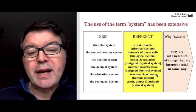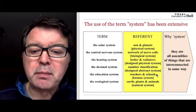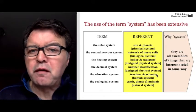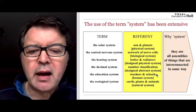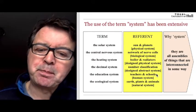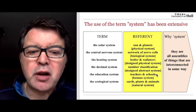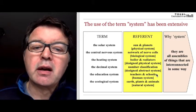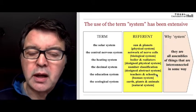The heating system — boiler and radiators — is what we call a designed physical system because it's been created by human beings. The decimal system is a number classification system; notice that it's actually abstract — it has no physical reality but it's still referred to as a system. The education system — teachers, schools — is a human or social system. The ecological system is a natural system involving earth, plants, animals, etc. All of these are very different in reference, but they're all core systems because they're assemblies of interconnected things that create a whole.